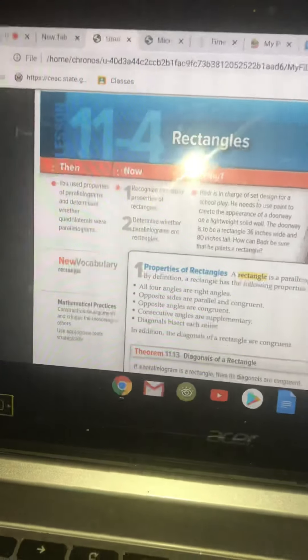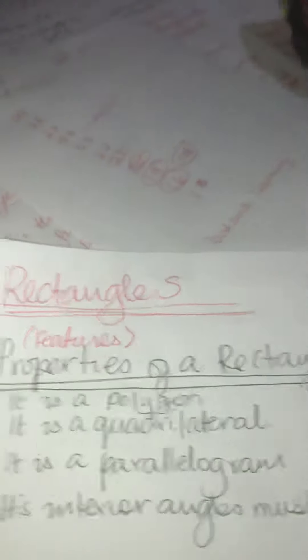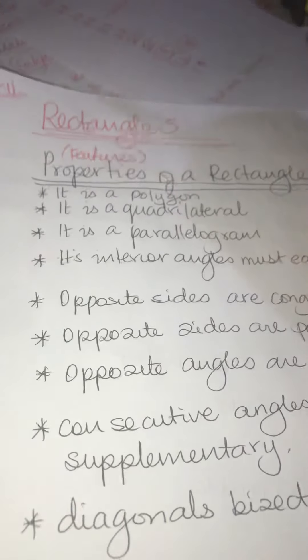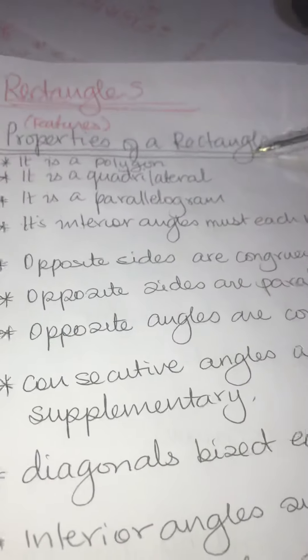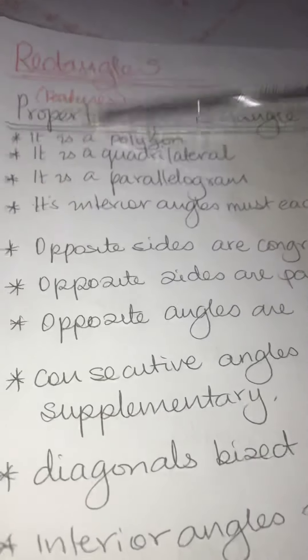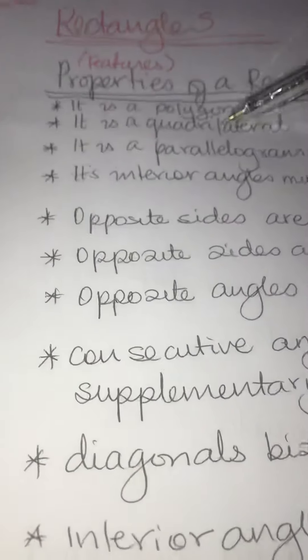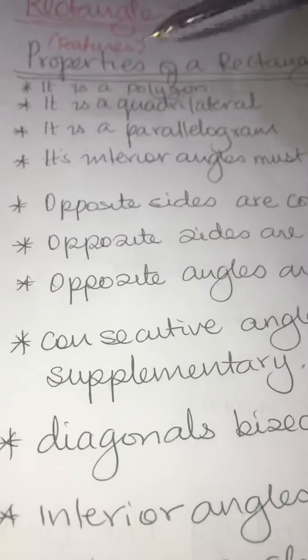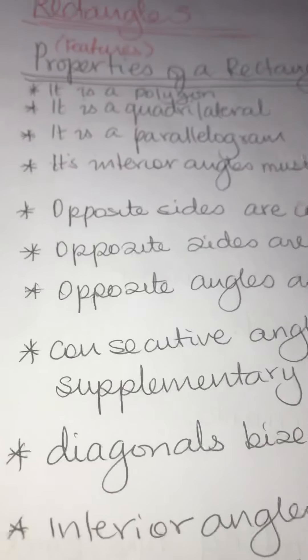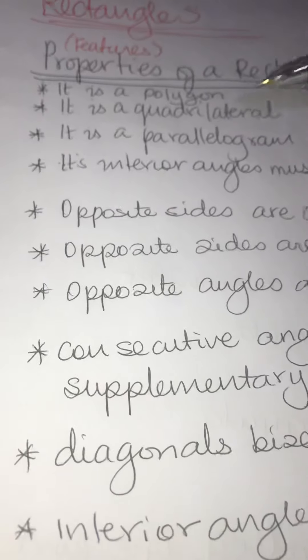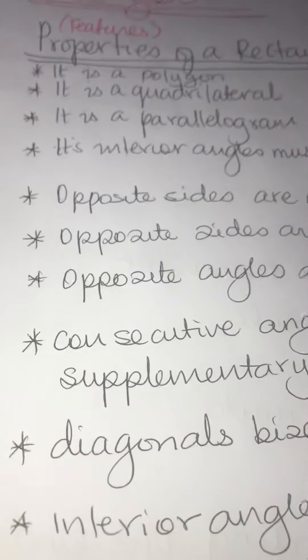We are doing lesson four on chapter 11 — it's called Rectangles. We need to know what a rectangle is. Now, features of a rectangle — you must know all of them. When I say features, I mean properties. The question can be asked different ways. First, it is a polygon, it is a quadrilateral — that means it has four sides. The sides are straight, it is closed, and the sides are not crossing each other.